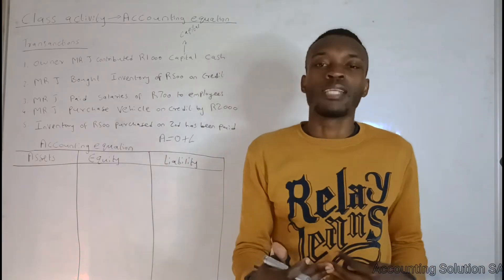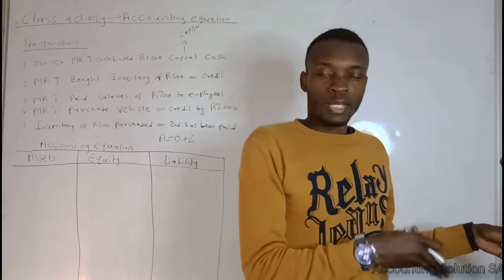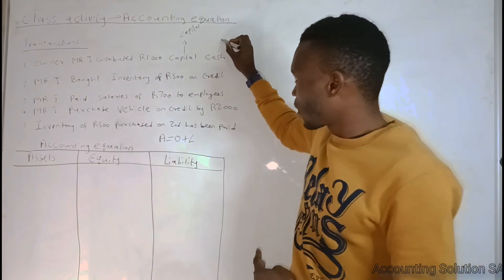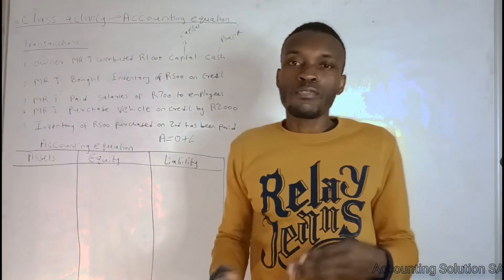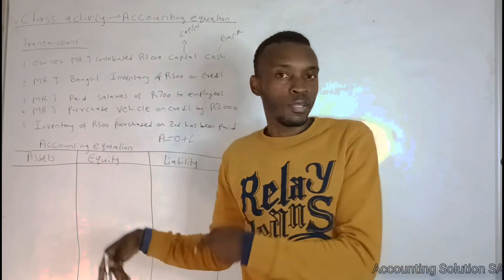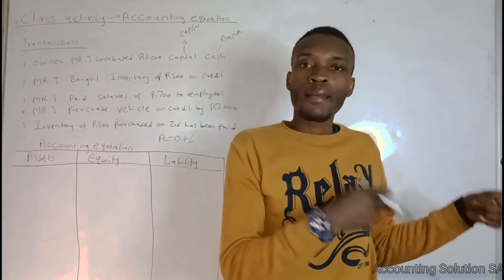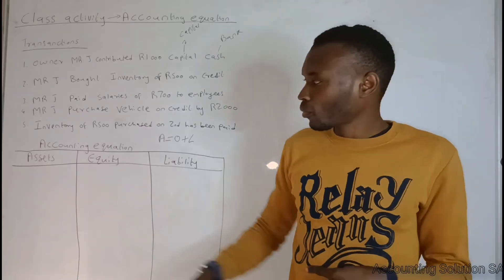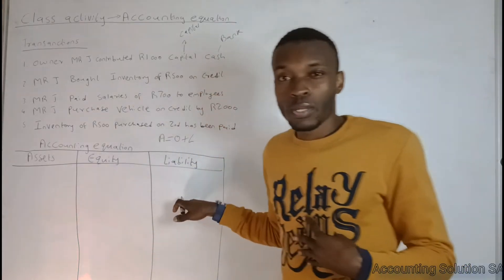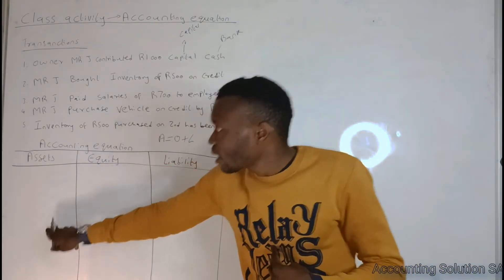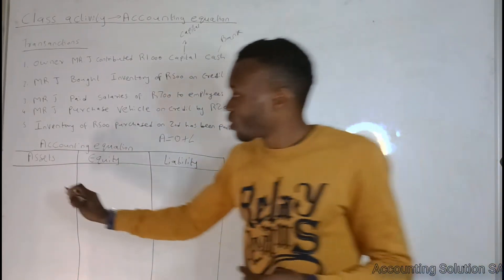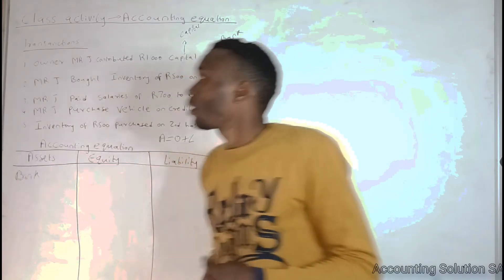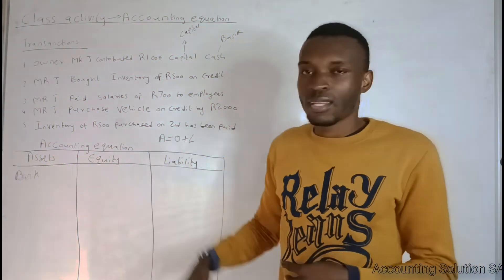When running a business we can't handle cash directly — we have to put it in the bank. So we call it bank. Once you see the word 'cash,' know that it refers to bank. If you see 'received,' we receive it into our bank; if we paid, we paid using our bank. These are the two components we identified, and the amount is R1,000. Bank is an asset, so we write bank; and capital is part of equity.